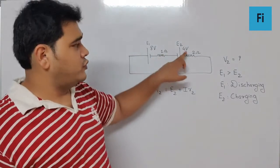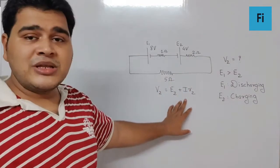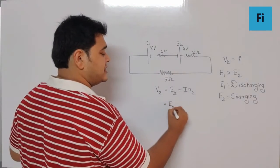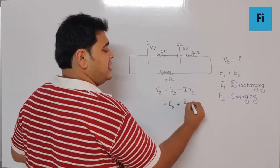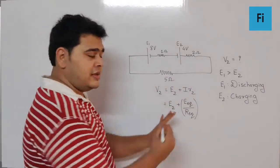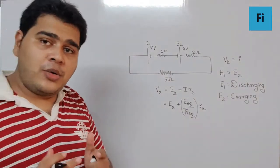Now definitely for a circuit, I can say I is going to be E equivalent upon R equivalent as the current into R2. This should be the value. So now I can say E2 is nothing but 4 volt plus E equivalent.